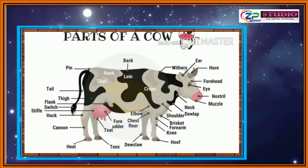Now we will see the body parts of a cow. Eyes, ears, horns (shinge), forehead (kapal), nostrils, muzzle, neck, dewlap, shoulders, brisket, forearm, knees, hoof — structures at the foot — dewclaw, elbow, chest, back, tail, thigh (mandia), flank, switch, hock, cannon, heel. They also have different structures for milking.